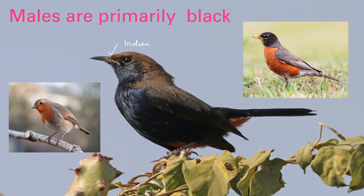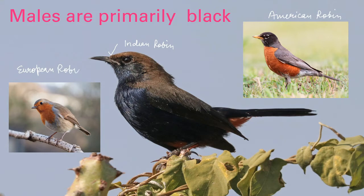This is Indian robin, this is American robin, and this is European robin. Now you can easily distinguish the differences between the three birds. Although they belong to the same species, they have different physical appearances.